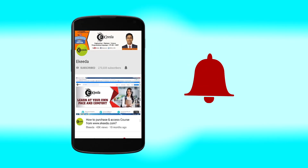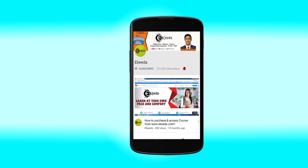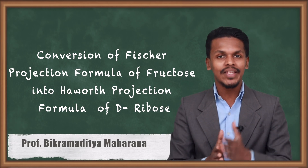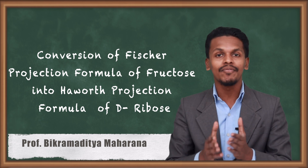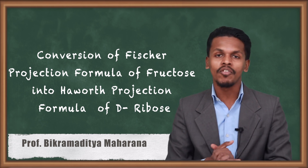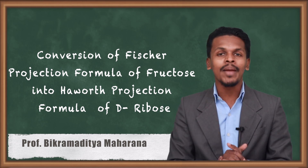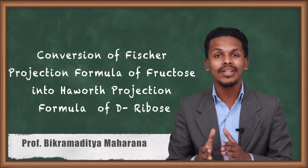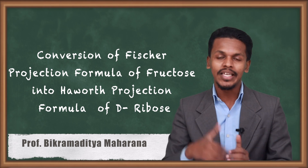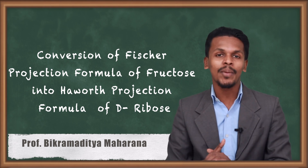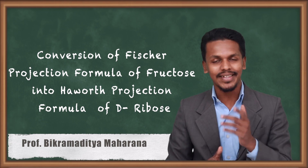Click the bell icon to get latest videos from Ikeda. Hello friends, in the previous topic we discussed the conversion of the Fischer projection formula for fructose, that is D-fructose, into the Haworth projection formula. Now in this topic I am going to talk about the conversion of the Fischer projection formula for D-ribose into the Haworth projection formula. So let's get started.